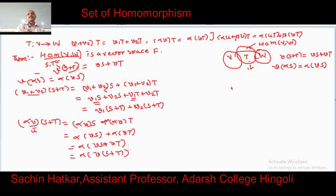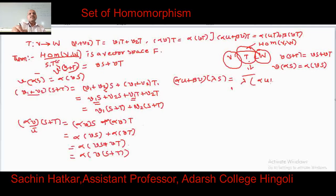Now we show that αS is also a homomorphism. Take the combined condition: (λS)(αU + βV). Apply the definition: αS(V) = α·S(V). This gives λ times S(αU + βV). Since S is a homomorphism, this equals λ times (α·S(U) + β·S(V)).